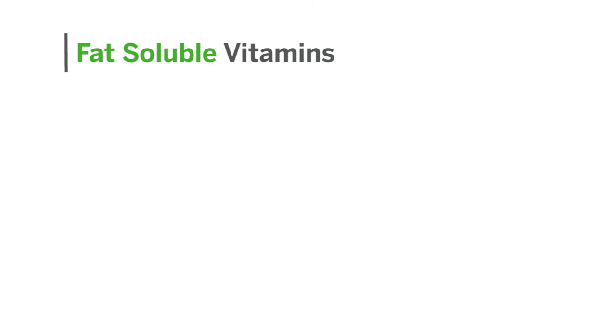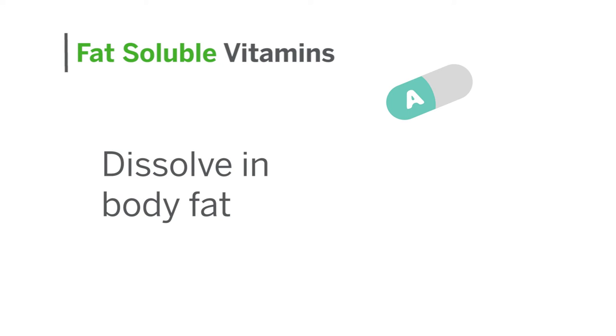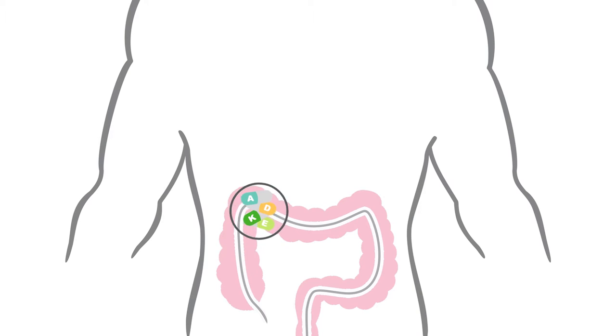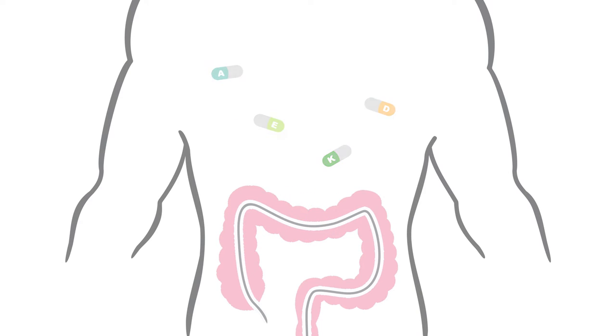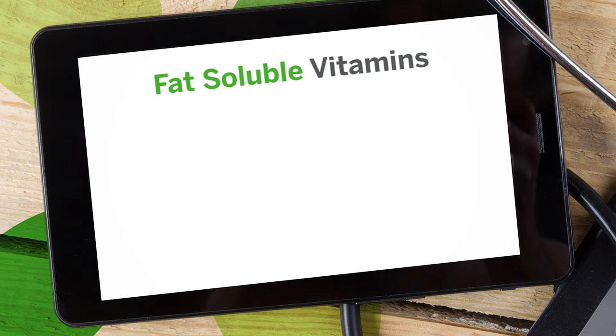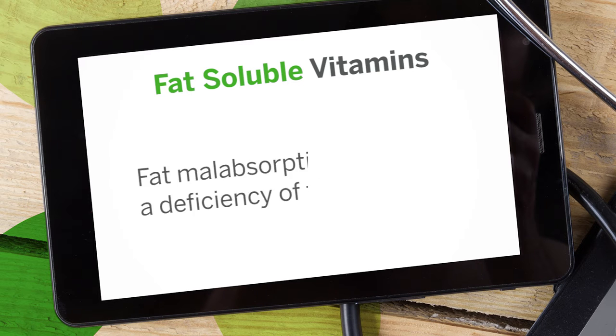Fat-soluble vitamins are vitamins that dissolve in fats such as vitamin A, D, E, and K. They are generally absorbed into fat sacs which then travel through the GI tract and into the body's circulation where they are stored, unlike water-soluble vitamins which get excreted. It's important to note that individuals with conditions resulting in fat malabsorption can develop a deficiency of these vitamins.